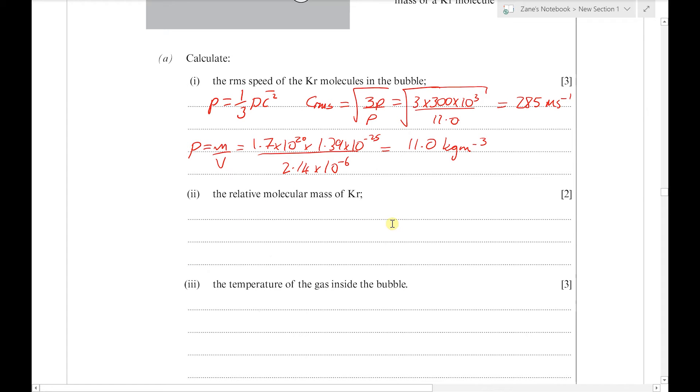Next, we're asked to find the relative molecular mass of krypton. If we remember that M_r is the mass of a molecule compared to one-twelfth of a carbon-12 atom, where one-twelfth of carbon-12 is 1u, then this question is very simple to calculate.